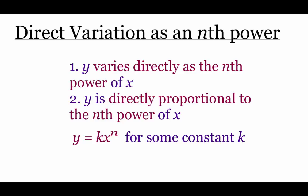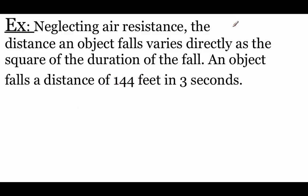The next type is direct variation as an nth power. The example might say y varies directly as the nth power of x, or y is directly proportional to the nth power of x. The equation looks like y equals k times x to some nth power — maybe squared, maybe cubed.